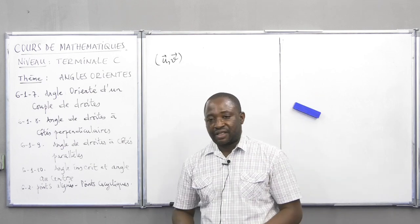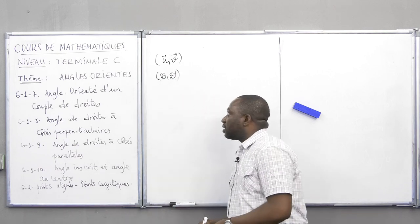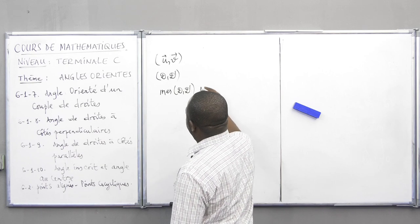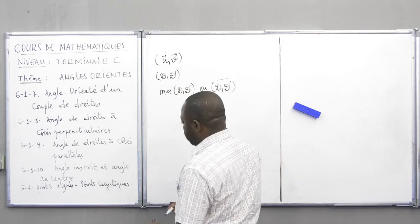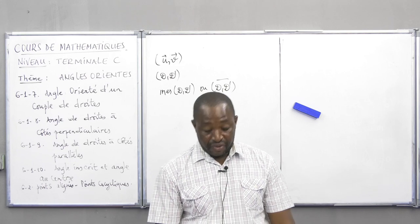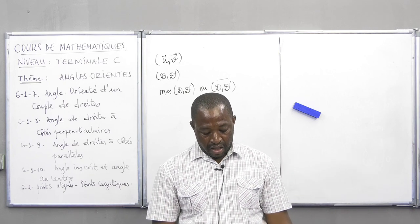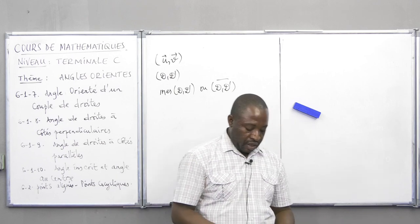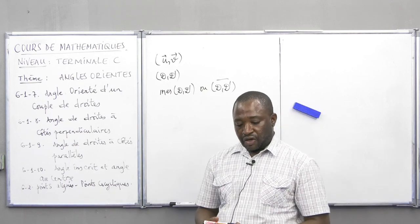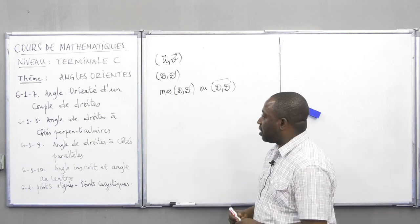Il en est de même pour les angles de droite. Un angle de droite est un couple (D, D') de deux droites du plan, et sa mesure sera notée mes(D, D'). Pour un angle orienté de vecteurs, il existe une infinité de mesures, et il y en a une appelée mesure principale, unique, dans l'intervalle ] -π ; π [. C'est la même chose pour les angles orientés de droite : il y a aussi une infinité de mesures, mais parmi toutes ces mesures, il y en a une et une seule qui appartient à l'intervalle ] -π/2 ; π/2 [.